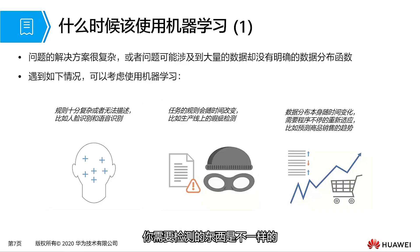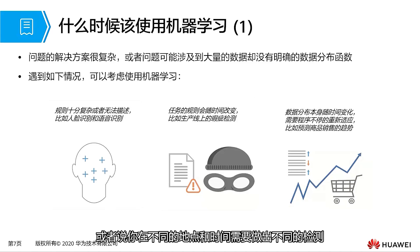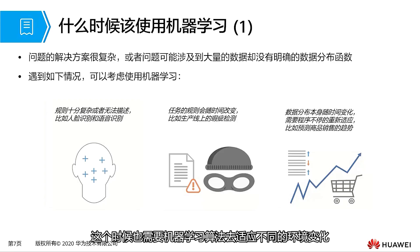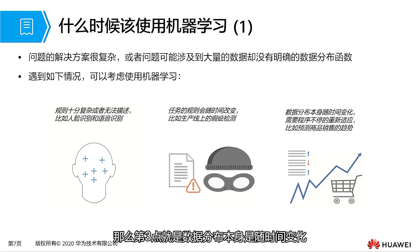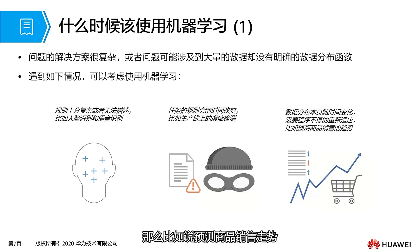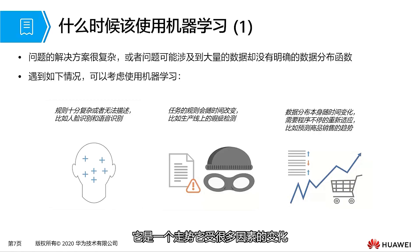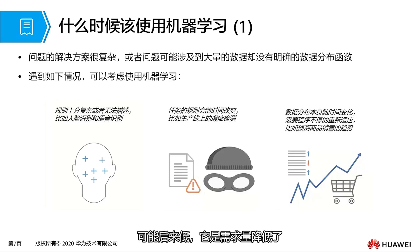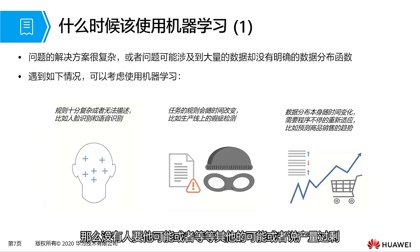The third point is that the data distribution itself changes over time, requiring the program to constantly readjust. For example, in predicting the sales trend of a product, the product may initially be high in price then low, and its trend is affected by many factors such as overproduction or dropping demand. Thus, its commodity trends become more and more diverse, and we need machine learning algorithms to understand what has caused these different trends.